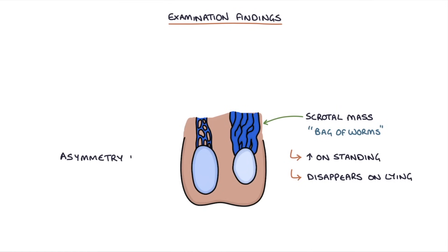There may also be asymmetry in the testicular size if the varicocele has affected the growth of the testicle on that side, leading to a smaller testicle on the side of the varicocele.